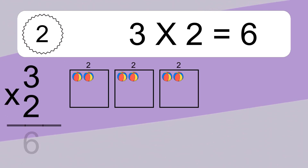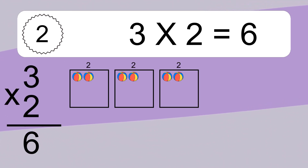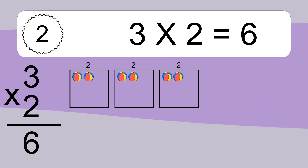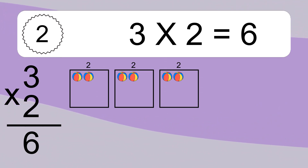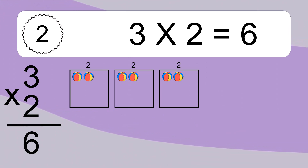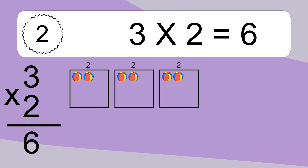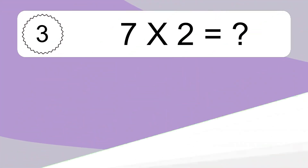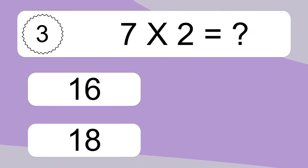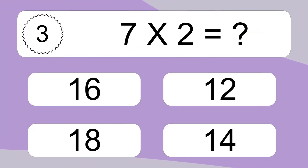3 times 2 equals what? 3 times 2 equals 6. We have 3 boxes, and each box has 2 colorful balls inside. If you count all the balls in all the boxes together, you will have 3 times 2 balls. This equals 6 balls.